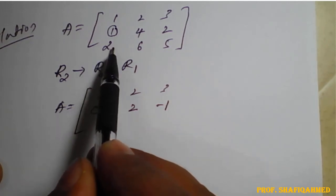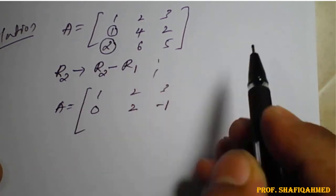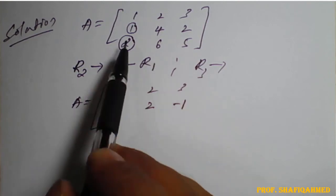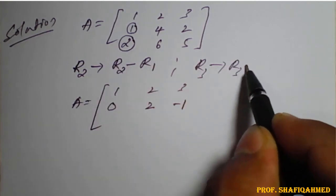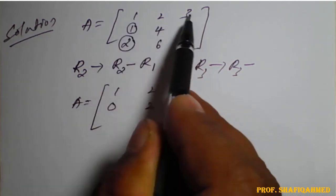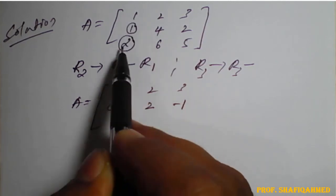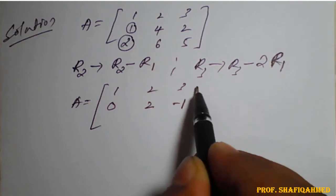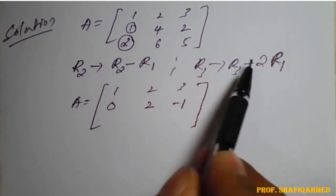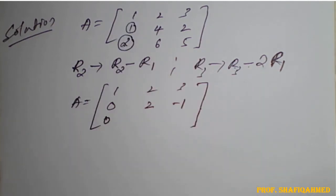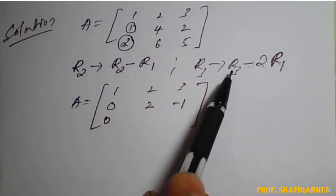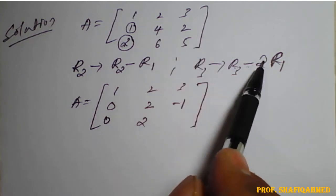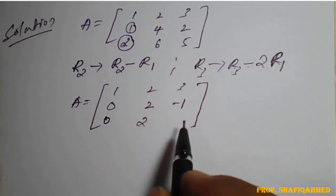We can simultaneously apply the operation on the third row as well. To make the third row's first element 0, the formula for R3 is R3 minus 2 times R1. So: 2 minus 2 times 1 is 0; 6 minus 2 times 2 is 6 minus 4 equals 2; 5 minus 2 times 3 is 5 minus 6 equals minus 1.